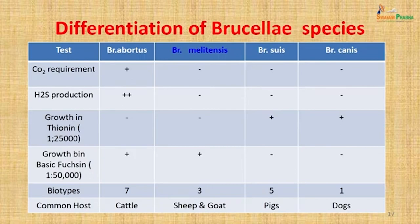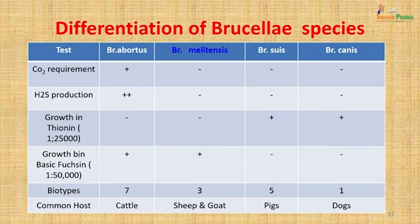To differentiate which Brucella species was involved, various tests were done. Growth without CO₂ requirement pointed to either B. melitensis, B. suis, or B. canis. H₂S production was not observed. Growth in the presence of thionine dye was not seen, while growth in the presence of basic fuchsin was seen, indicating Brucella melitensis. This species is commonly transmitted to man by sheep and goats, with 3 biotypes capable of infecting man.